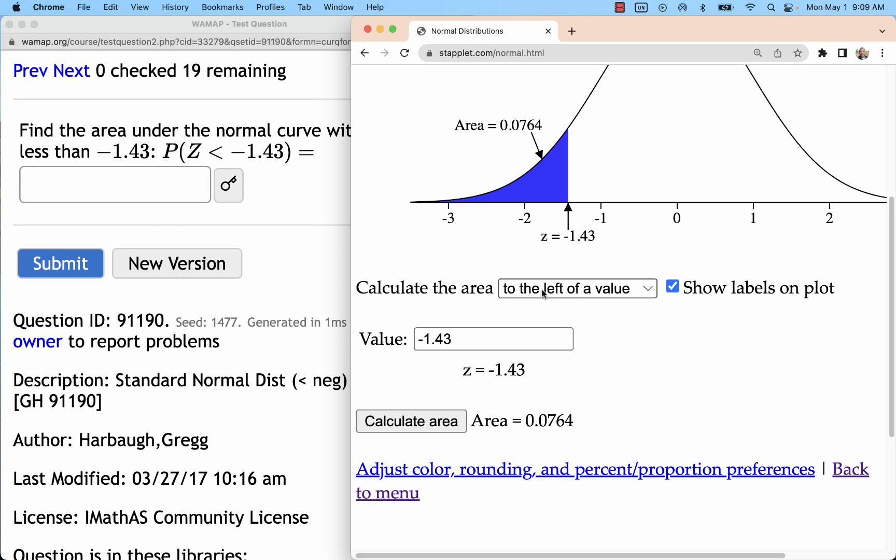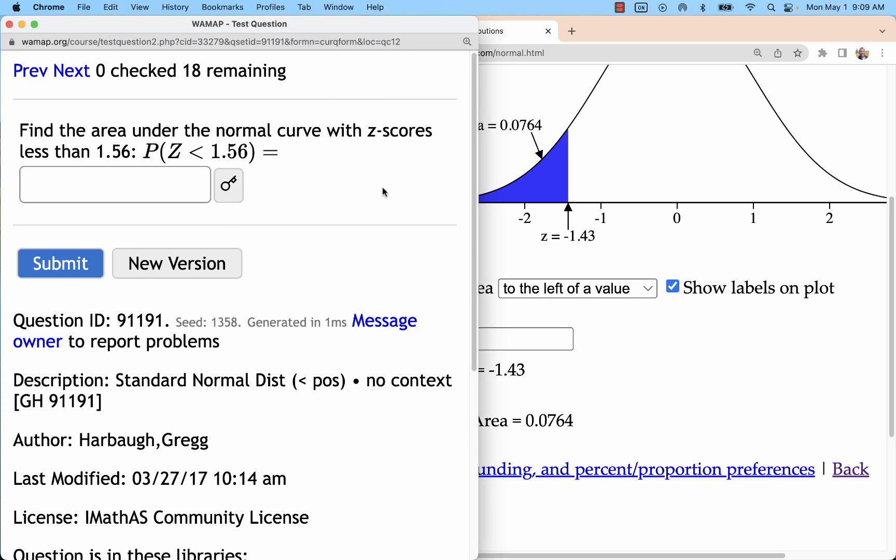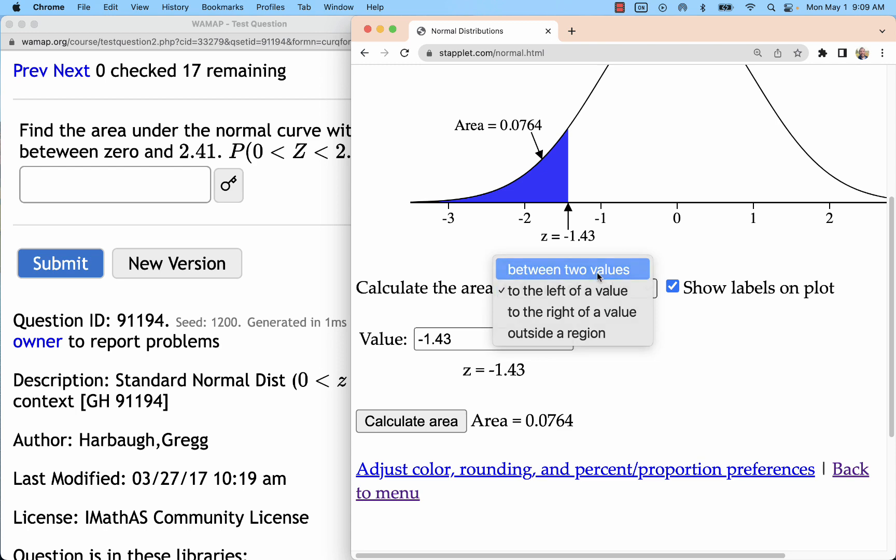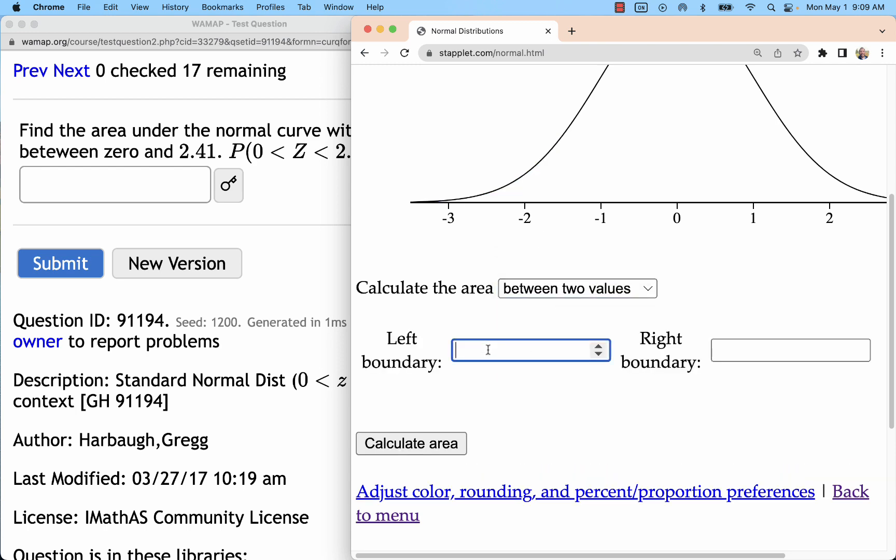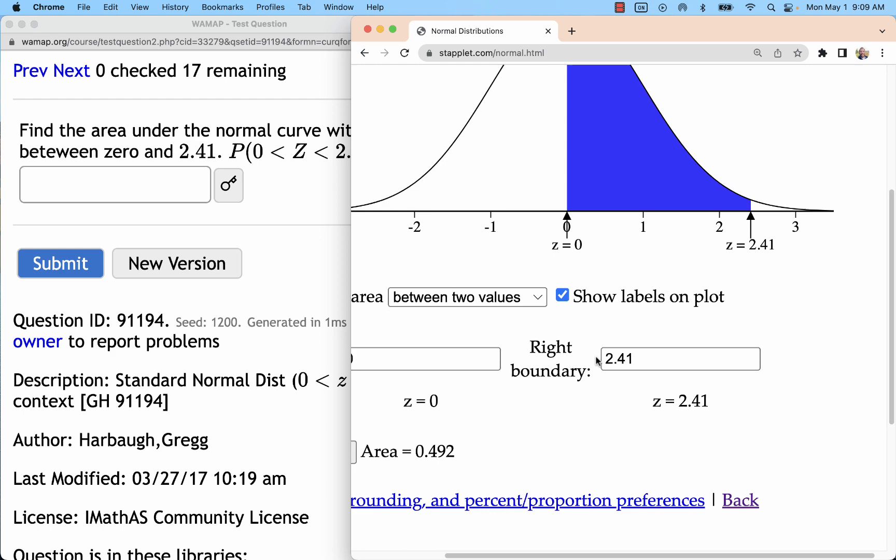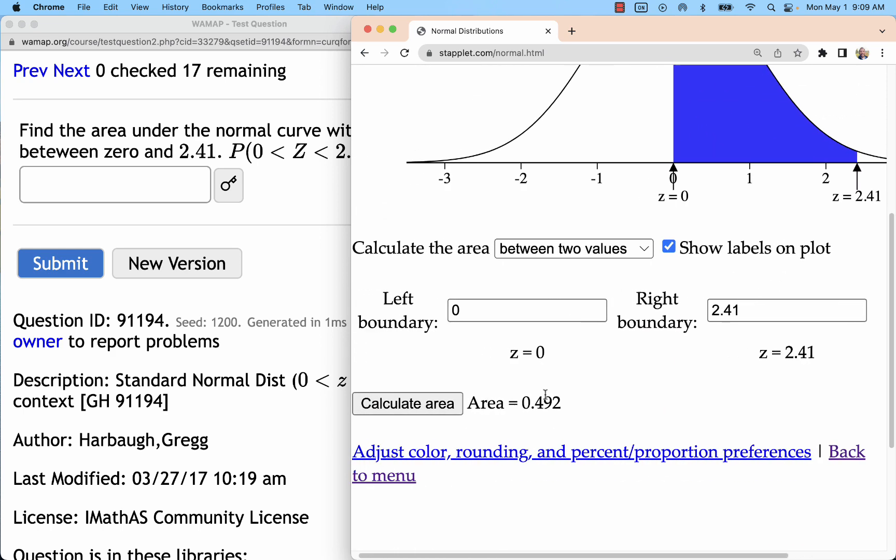Another example of this problem would be something where we're going in between two values. We're going to put the lower number left side first, higher number or that right side second, and we'll see that shaded and labeled area. This time it must be 0.4920 because I do have four digits of precision there.